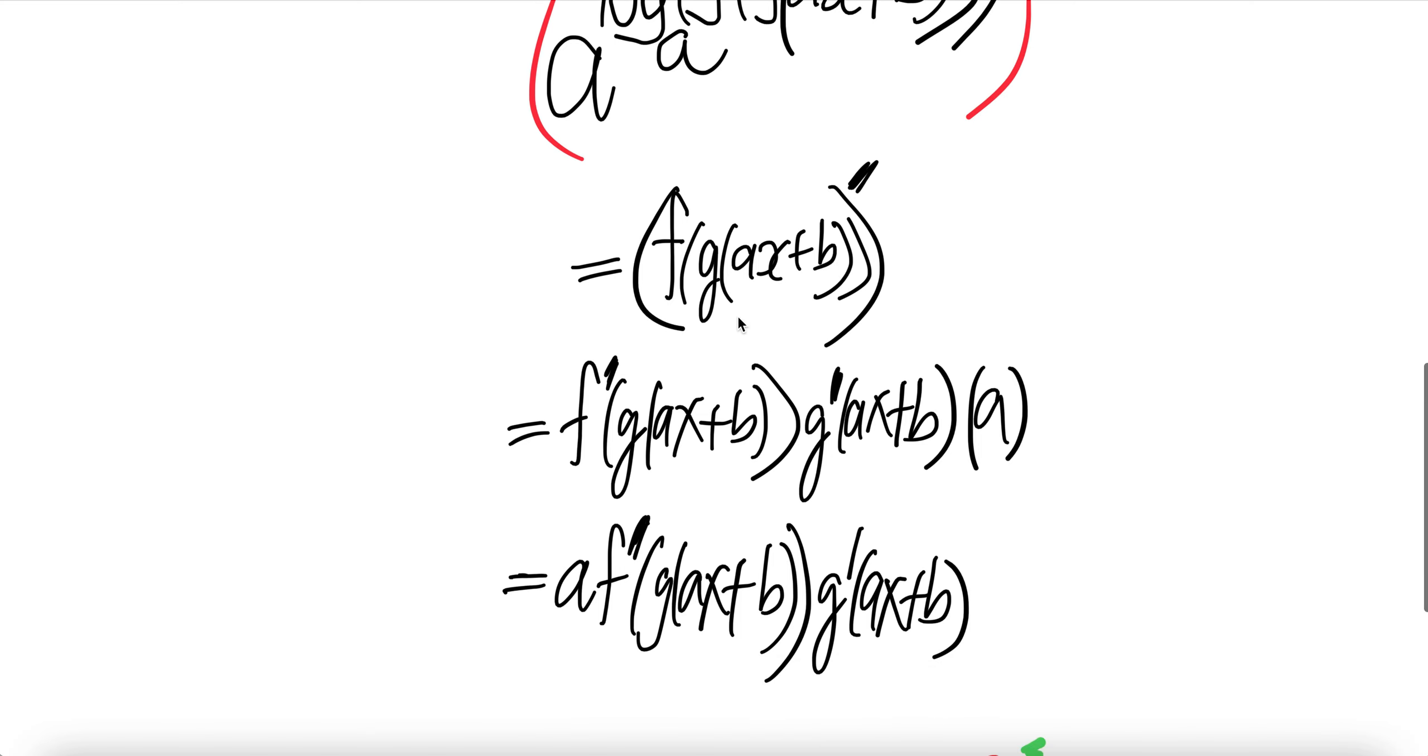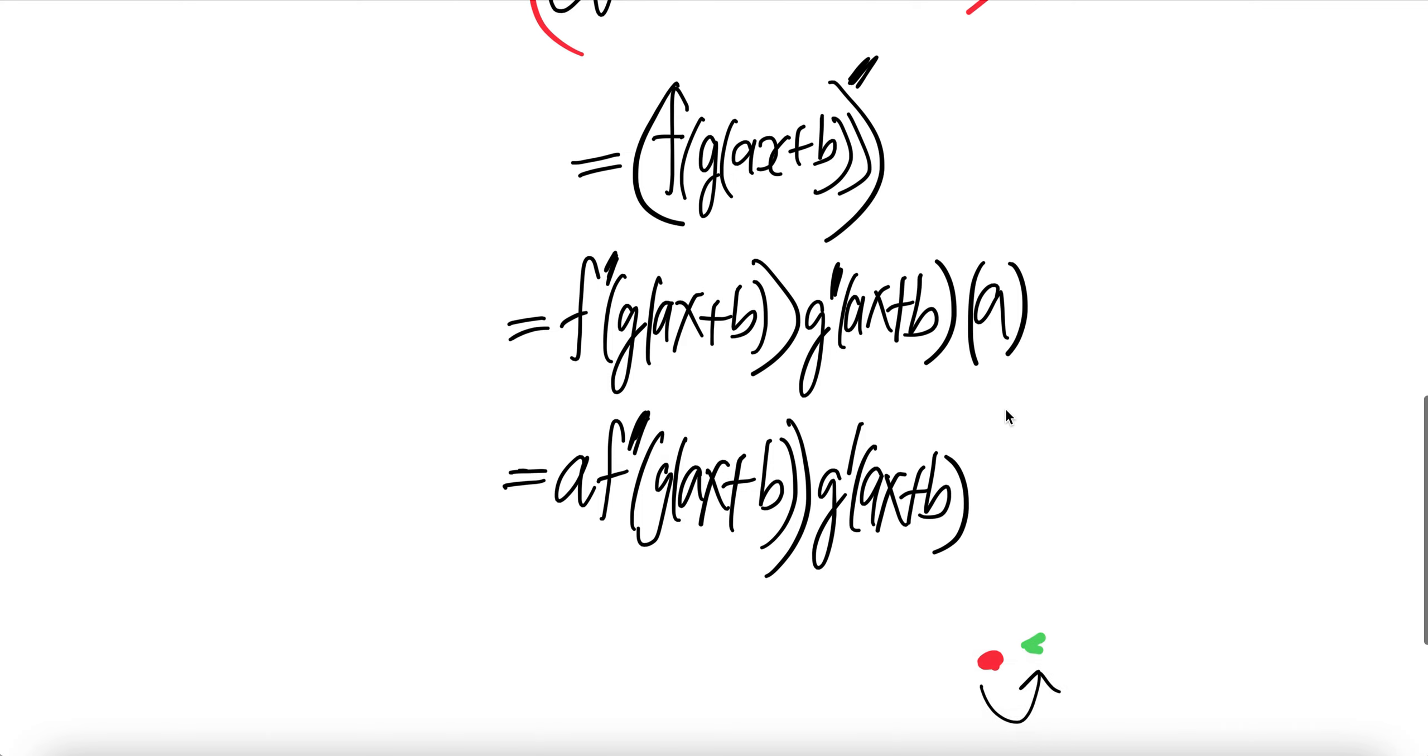The derivative of that is f prime of the inside function times the derivative of the inside times the derivative of ax plus b which is a. Put a in front here. Everything is the same. Done.